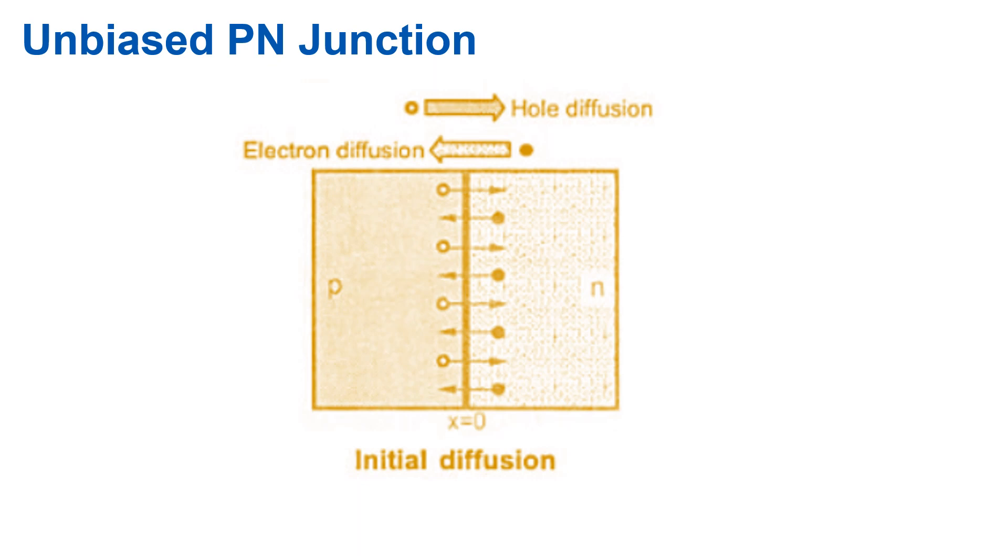In a P-N junction, on N-side, there are large number of electrons, while on P-side electrons are minority in number. Hence the diffusion starts and electrons start moving from N-side to P-side. It is called electron diffusion. Similarly, hole diffusion takes place from P-type to N-type semiconductor.